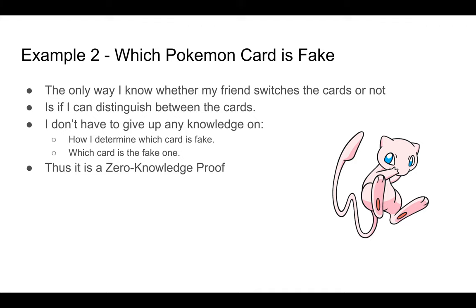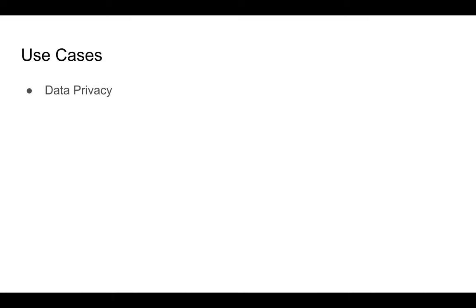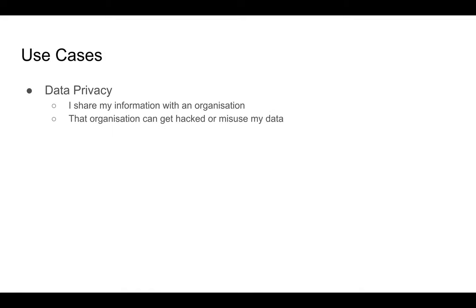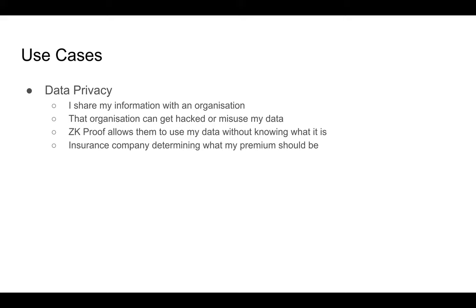Why should you care about zero-knowledge proofs? Let's quickly look at some use cases. Essentially, it's all about data privacy. I have to share my information with an organization, and that organization can get hacked or misuse my data. Zero-knowledge proofs allow them to use my data without knowing what it is. For example, insurance companies need to determine what my premium should be, or government agencies whether to issue visas. There are many times when organizations need our information, but with zero-knowledge proofs we can prove something without giving those organizations access to our data.